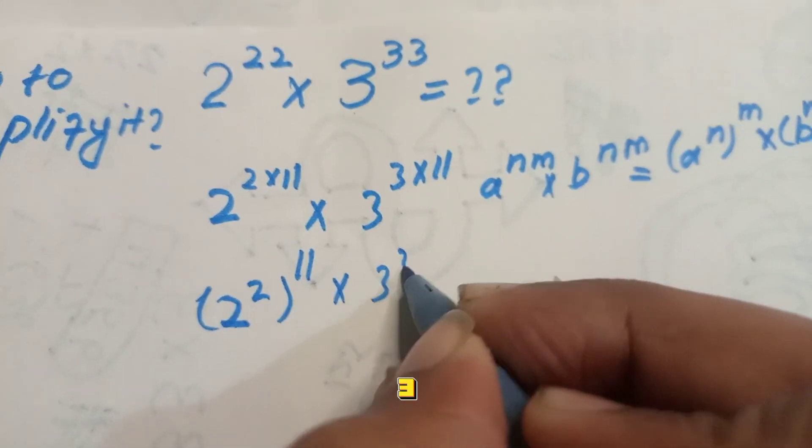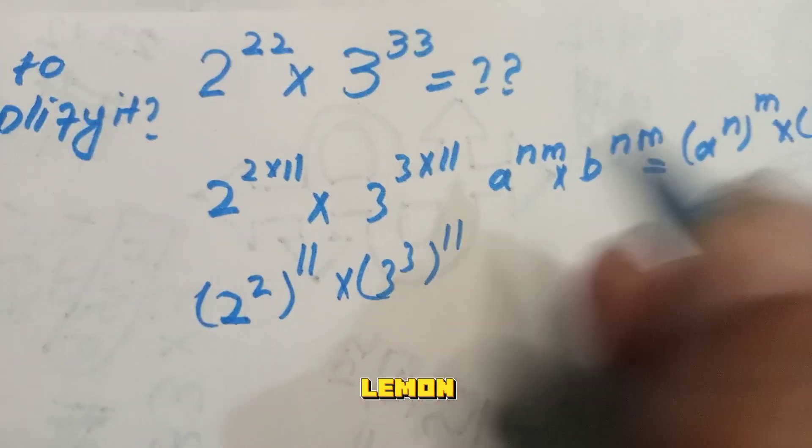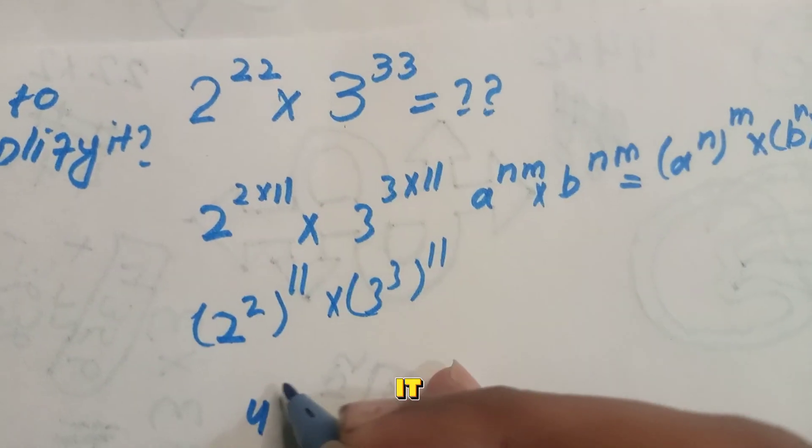And 3³ whole power 11. So we can write it as 4^11 and 27^11.